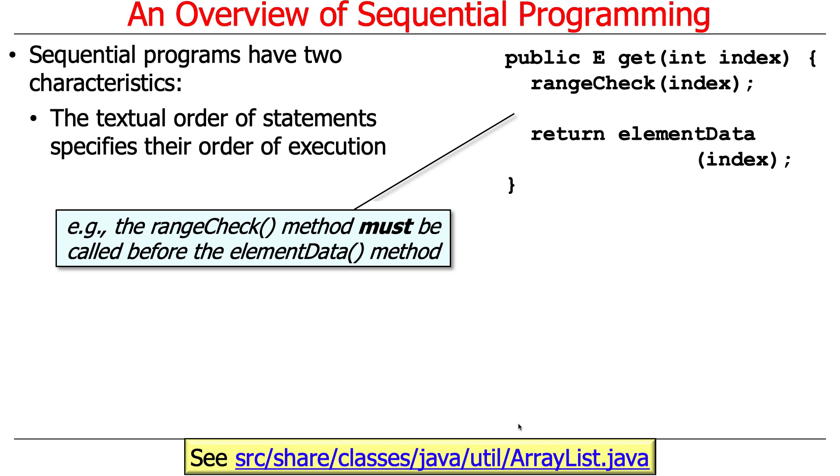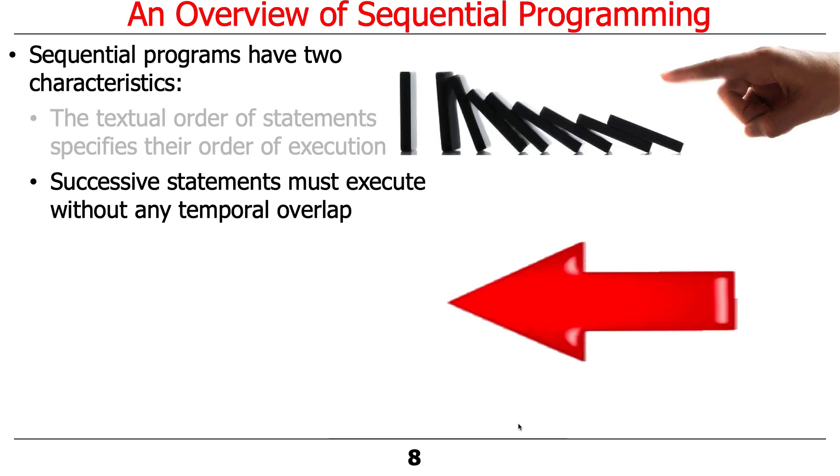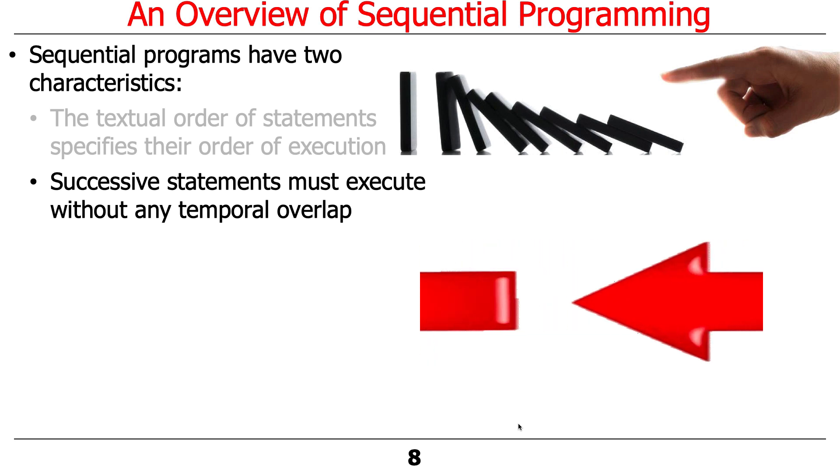then we get the element that is at that index location. One of the key points of a sequential implementation is that the range check method must be called before we access the element data method. So no surprise, you guys have done this a lot.